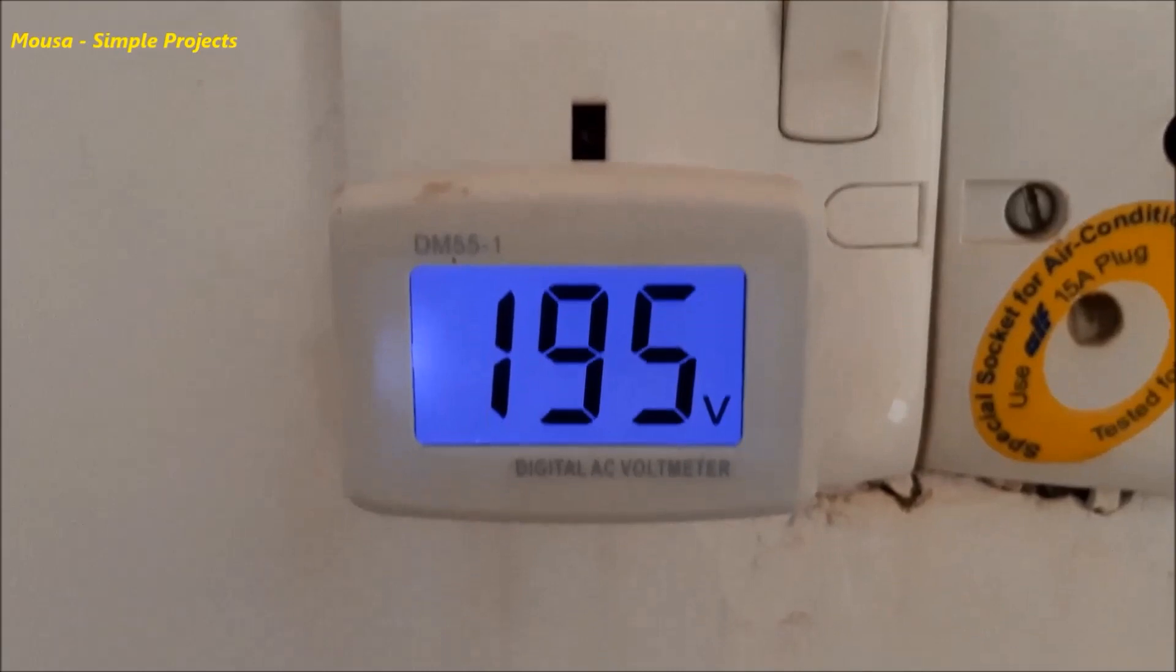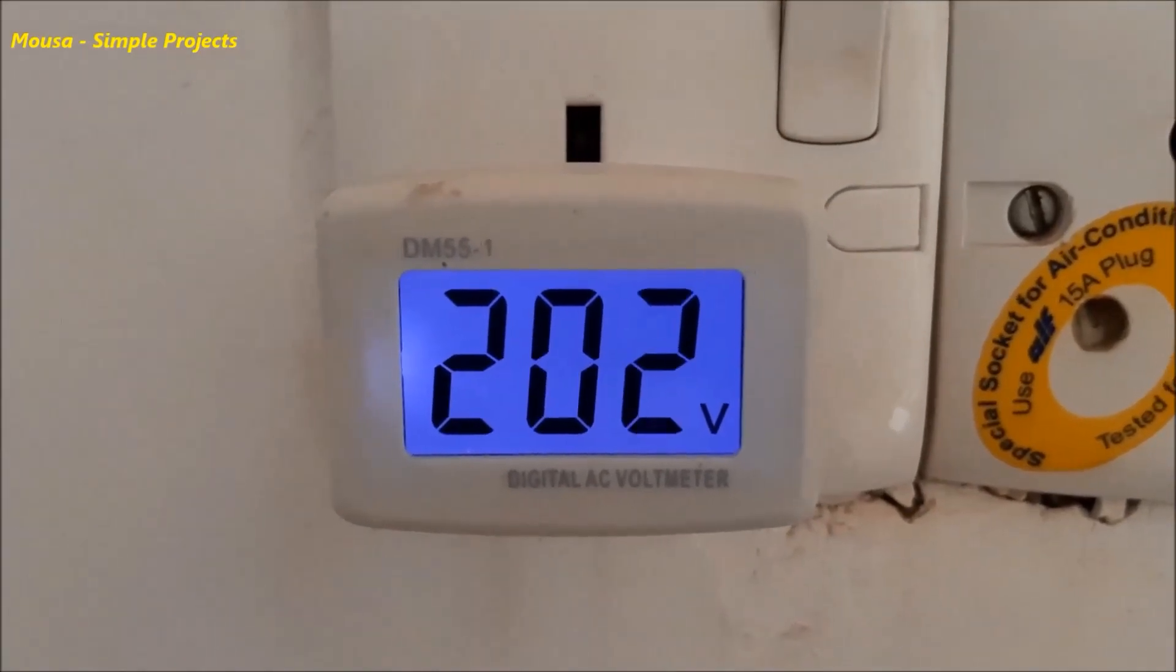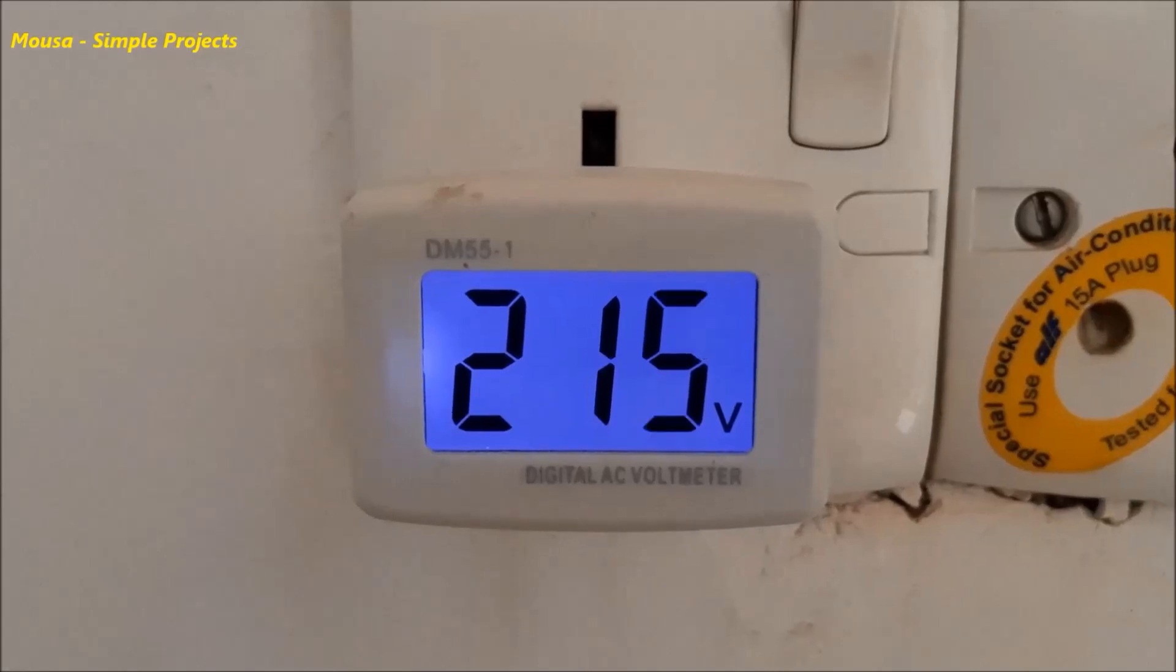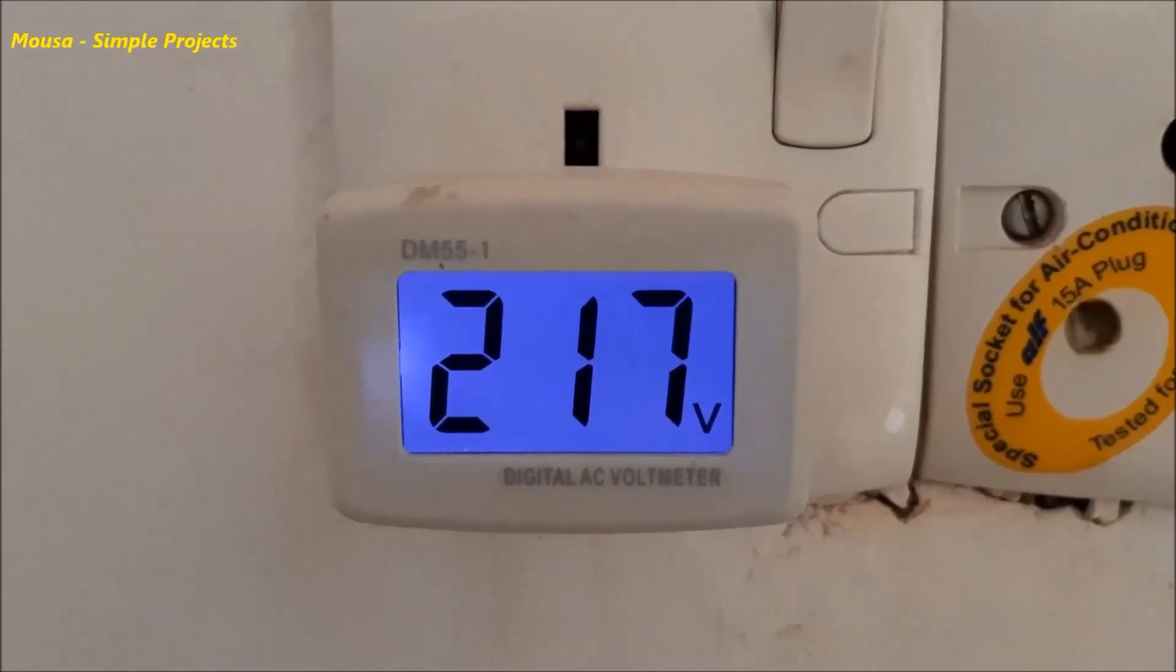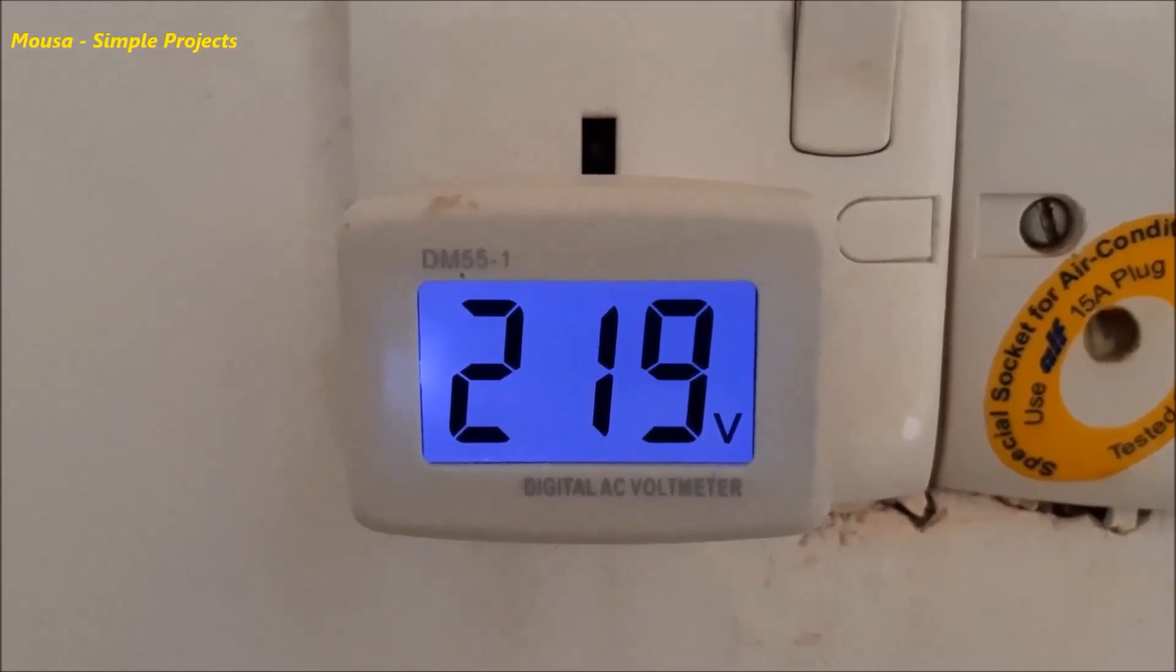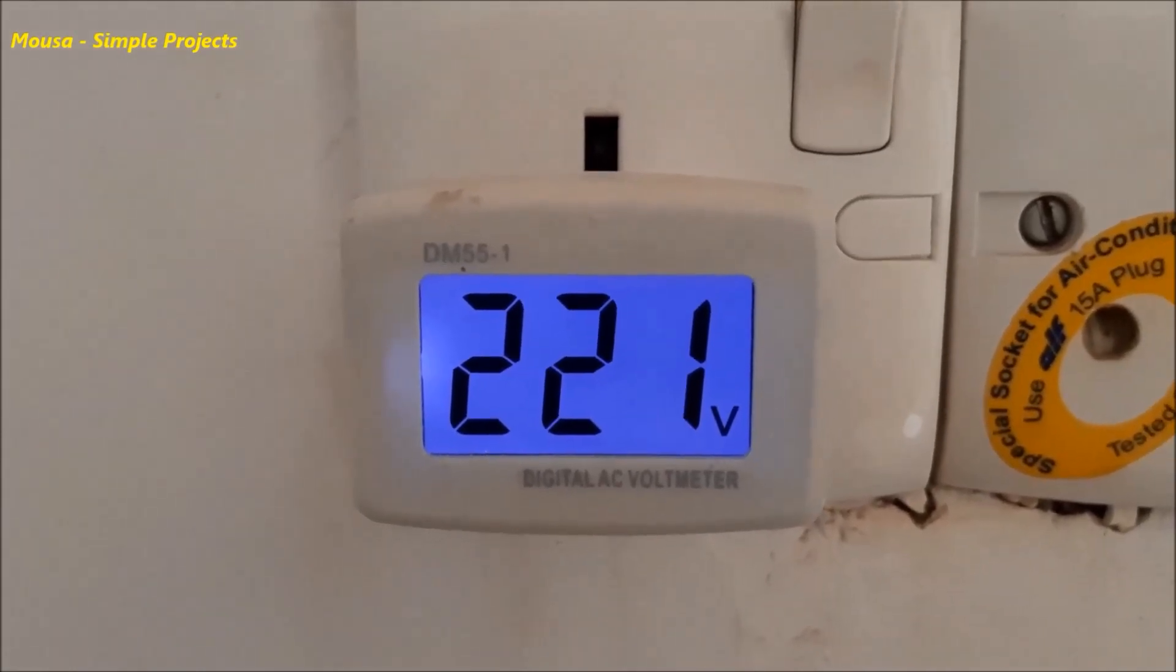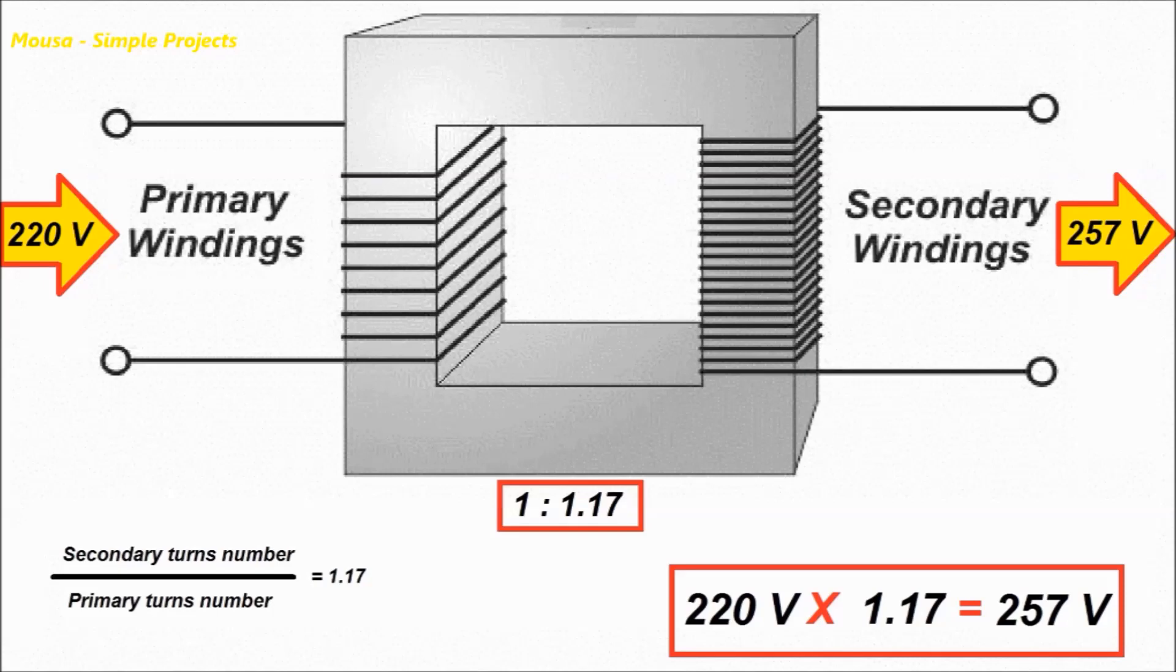But the problem here is that the mains voltage is changing all day long. So using a transformer with constant secondary to primary ratio is not a good idea. Because if the mains voltage suddenly jumps to 220 volts, the secondary side of the transformer will be 257 volts, and this high voltage can damage your electric appliances.